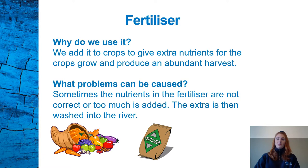Fertiliser — why do we use it? We add it to the crops grown in fields to give them the extra nutrients needed for the crops to grow and produce an abundant harvest. But what problems can it cause? Sometimes the nutrients in the fertiliser are not the correct ones, or too much is added. This means the soil and plants can't absorb all of the fertiliser, so it remains on top of the soil and can be washed off into rivers by the rain, where it does not belong and can have a negative impact on the environment.